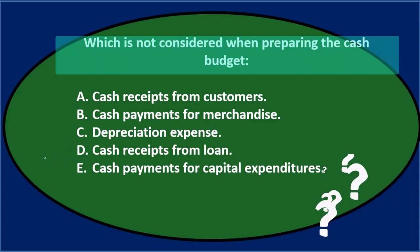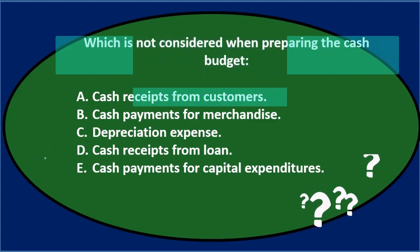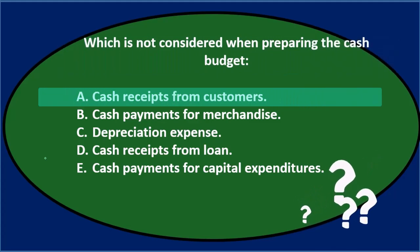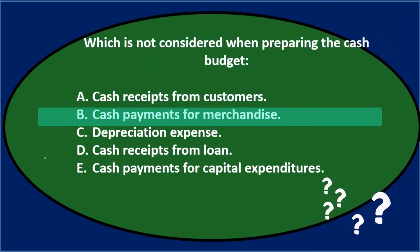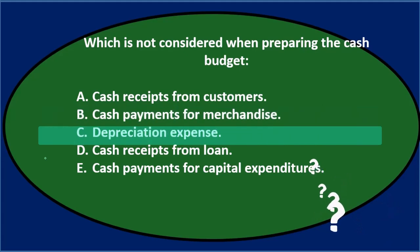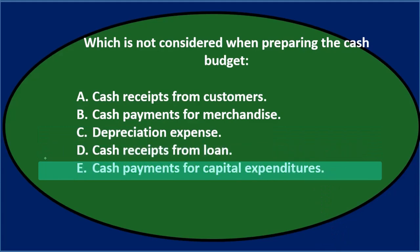Next question: which is NOT considered when preparing the cash budget? A. Cash Receipts from Customers. B. Cash Payments for Merchandise. C. Depreciation Expense. D. Cash Receipts from Loan. E. Cash Payments for Capital Expenditures.